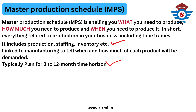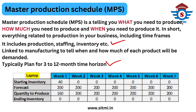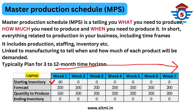Typically, MPS is done for the next 3 months to 12 months, though it depends on the company — a company can also extend their MPS period. Now let's take a simple example of MPS. Here you can see Week 1, Week 2, Week 3, up to Week 7. We also have a starting inventory of 40 quantity. We are planning a Master Production Schedule for a product called laptop.